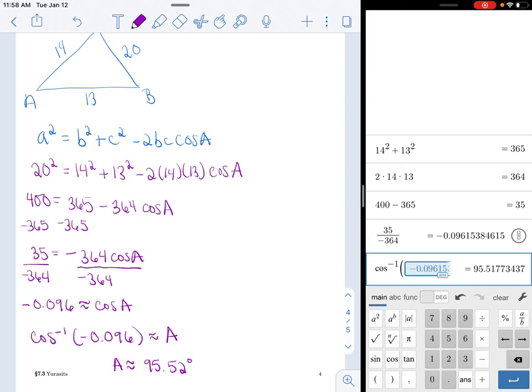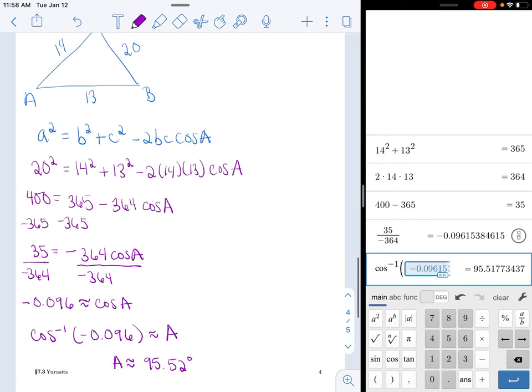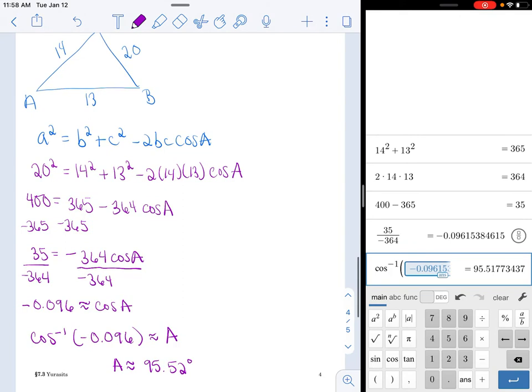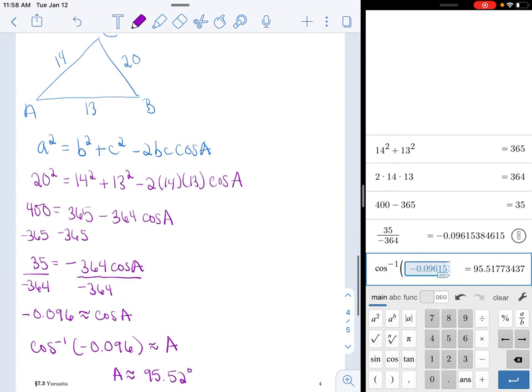All right, well, we have one angle, so we need another one. Well, we're going to have to do law of cosines again, because I started with law of cosines, and just for consistency, I'm just going to stick with it. All right, so just going in order, I'm going to solve for B.